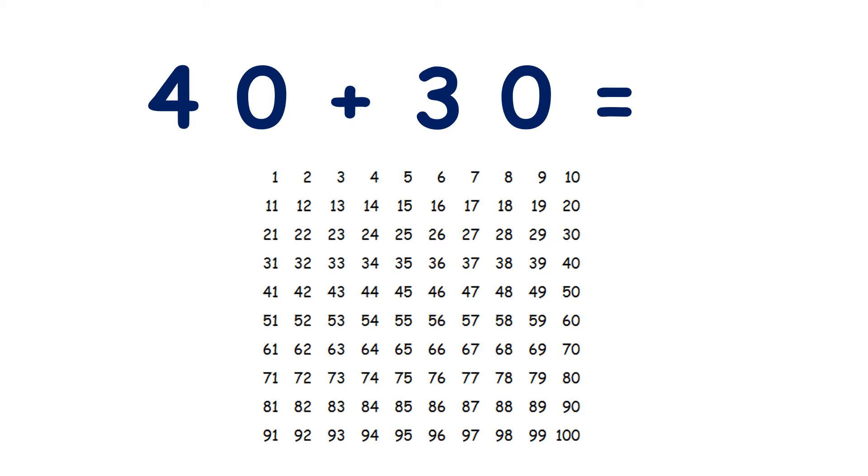Now, 40 add 30 on our 100 square. So we find 40 on our 100 square. And what are we going to do now? Well, if we're adding 30, we need to add 3 tens. So we can go down 1, 2, 3. So 40 add 30 is 70.